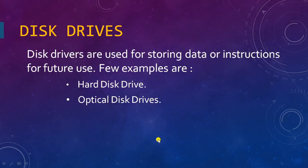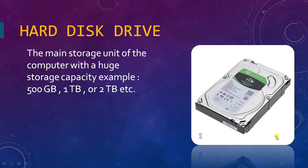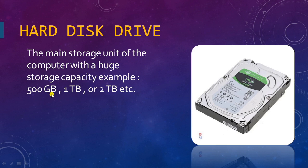Another part of the system unit is disk drives, which are used for storing data for future use. They are categorized into two types: hard disk drives and optical disk drives. The hard disk is the main storage of the computer — all instructions and data get stored here inside the system unit. It comes in different capacities like 500 gigabytes, 1 terabyte, 2 terabytes, and so on.